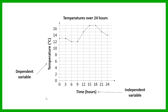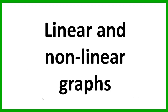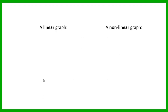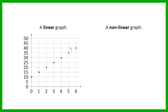Now let's have a look at linear and non-linear graphs. A graph can be linear or non-linear. Here's an example of a linear graph. Sometimes the points are just plotted individually, and sometimes they are joined by a line. In a linear graph, the points will all be in a straight line — so if you join them, it will be a straight line.